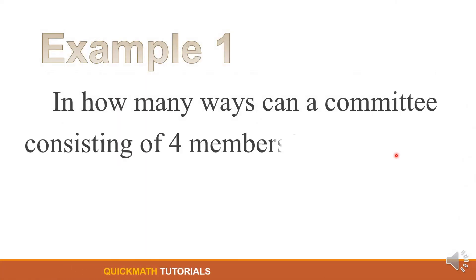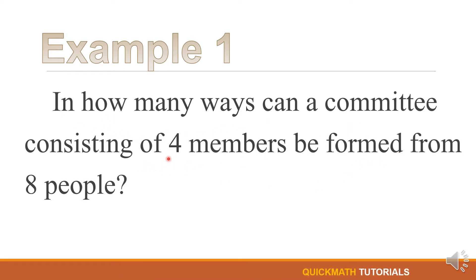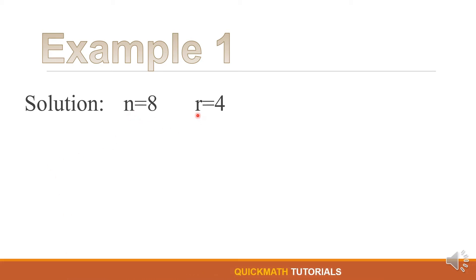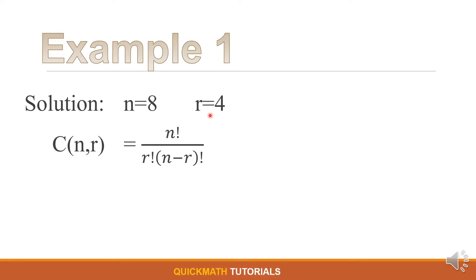For our first example: In how many ways can a committee consisting of 4 members be formed from 8 people? For our solution, our n is equal to 8 and our r is equal to 4. Using the formula, we will substitute the value of n and the value of r.